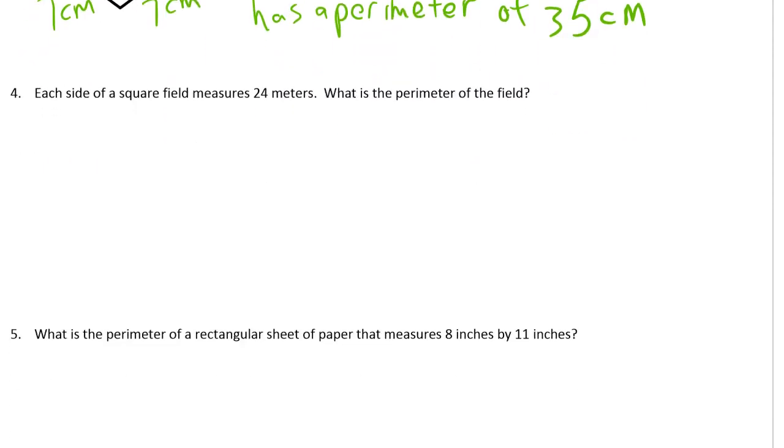Each side of a square field measures 24 meters. So there isn't a picture here so you better draw one. What is the perimeter of the field?